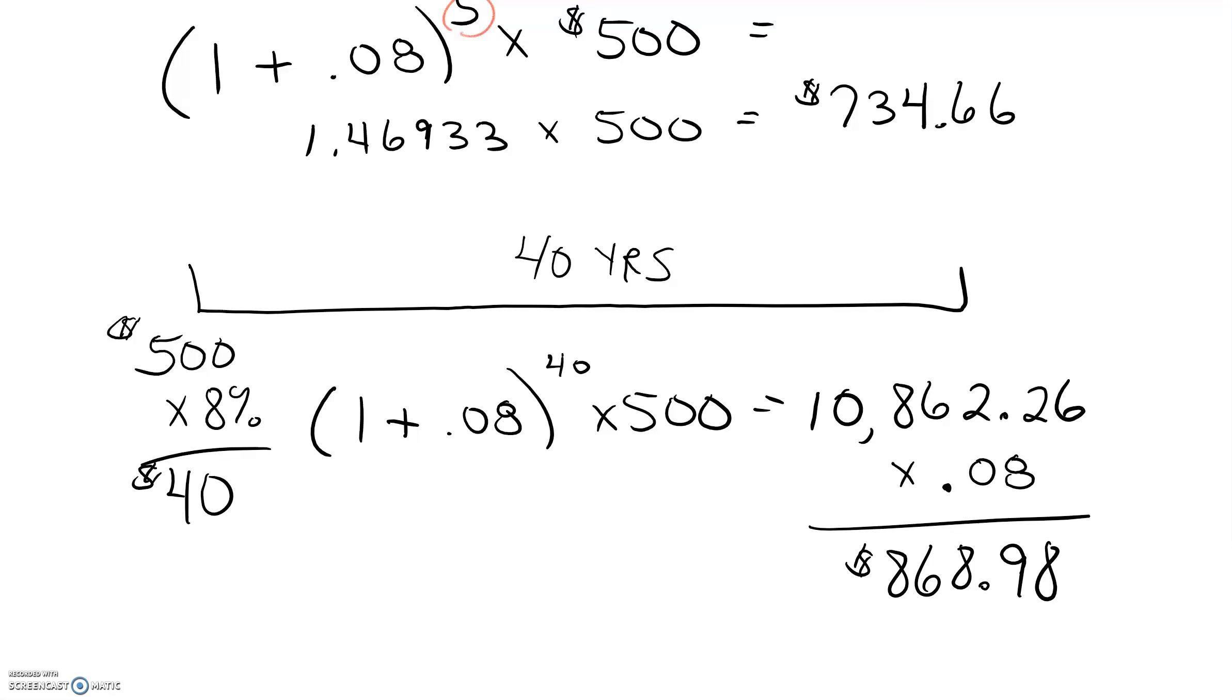So we earn $40 in interest in this very first year but then way out here in the 41st year we earn almost $870 in a single year. That's the hockey stick part that I'm talking about. How money really starts to grow once it gets further out in time. So this is how we move money across time.